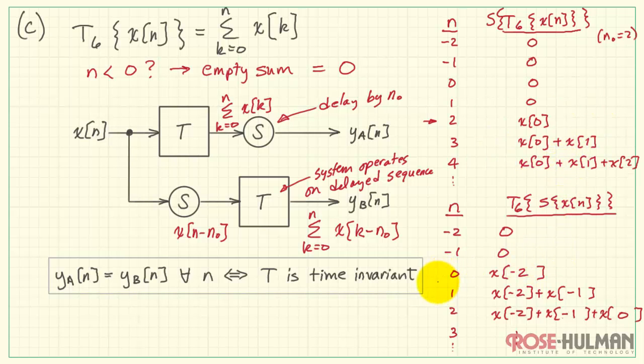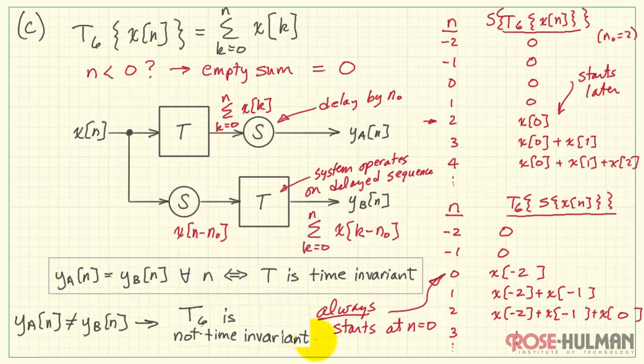Clearly, we see that these values are not the same. In fact, the version on the bottom always starts at n equals 0. The version on the top always starts later, depending on our value of n_0. Therefore, we see y_a is not equal to y_b, and T_6 is not time invariant.